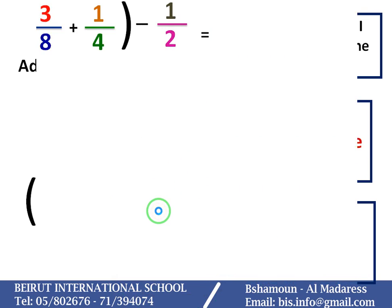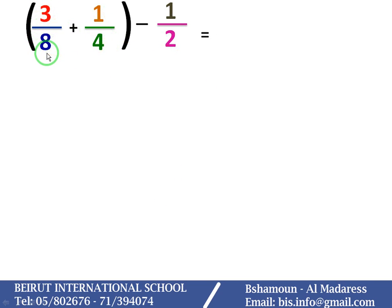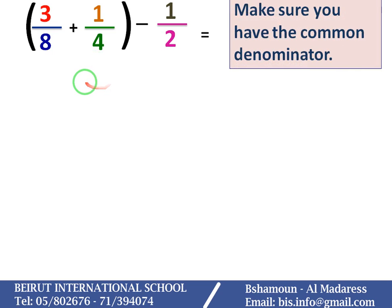Let's consider this example. Inside the parentheses, I have 3 over 8 plus 1 over 4. I have to add them, but make sure you have the common denominator.